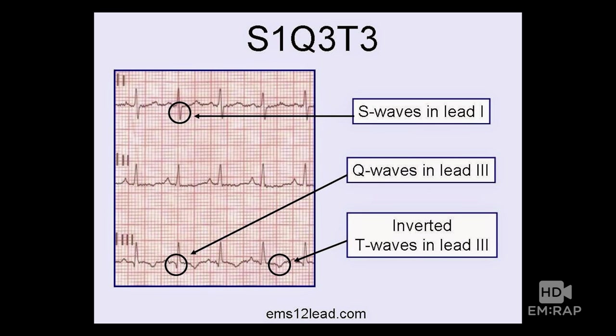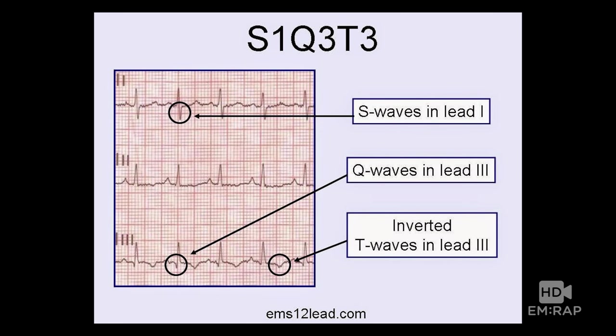S1Q3T3 is a classic finding you'll look for on EKG in a PE patient. I don't like it because I find it in a lot of patients without PE, and there are patients with PE who don't have it. To demystify it: S1 is an S wave in lead 1, Q3 is a Q wave in lead 3, and T3 is a T-wave inversion in lead 3. In my mind, this is just a fancy way of saying the axis is shifting. When you block outflow from the right heart, you get right heart strain — the axis shifts rightward. When studied alone, it doesn't accurately predict PE: most patients with it don't have PE and most PE patients don't have it.